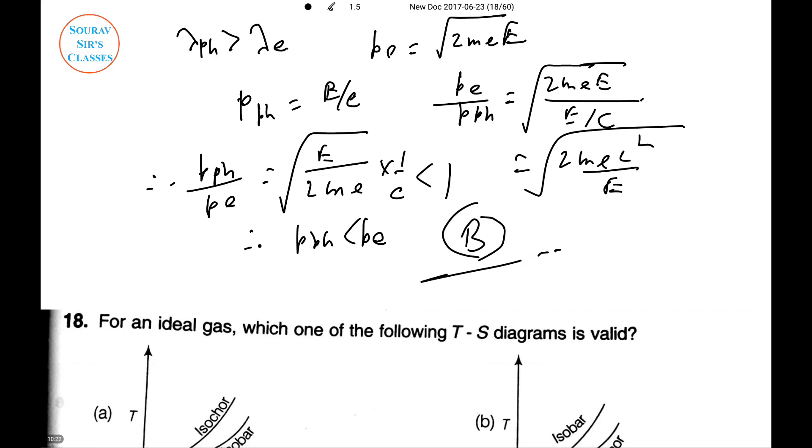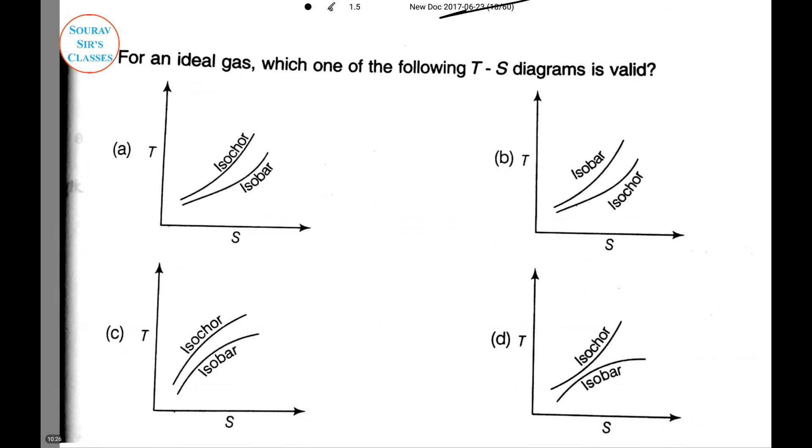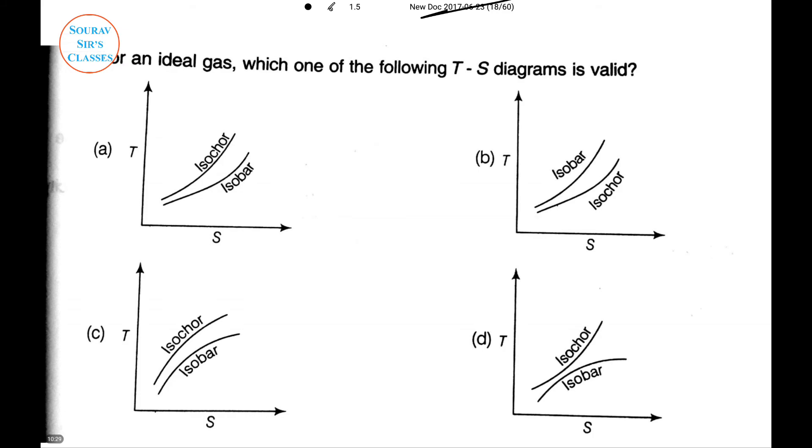Question 18: For an ideal gas, which of the following TS diagrams is valid? The graph shown in option (a) is the steepest graph. The TS diagram for an ideal gas must be steeper than any other. This is for the isochoric process, so answer (b) is correct.